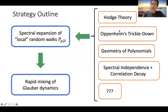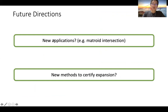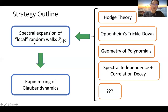There are now many other methods for obtaining spectral expansion of these local random walks, using techniques such as Hölder's theory, Oppenheim's trickle-down theorem, and the geometry of polynomials. In this work, we provide an additional technique based on spectral independence and correlation decay. Future directions include new applications of this approach — such as sampling common bases of two matroids — and developing new methods to certify local spectral expansion. Thank you.